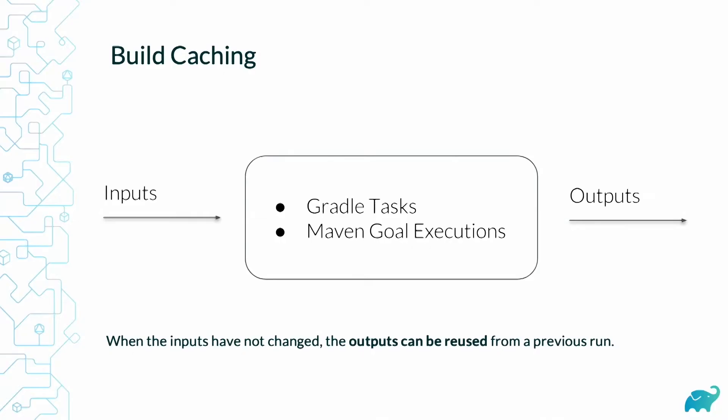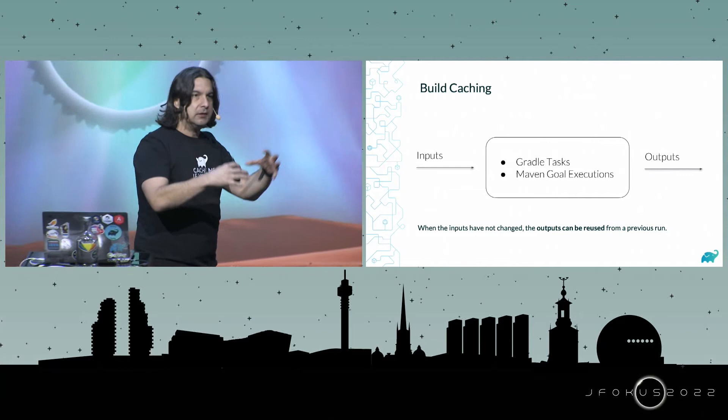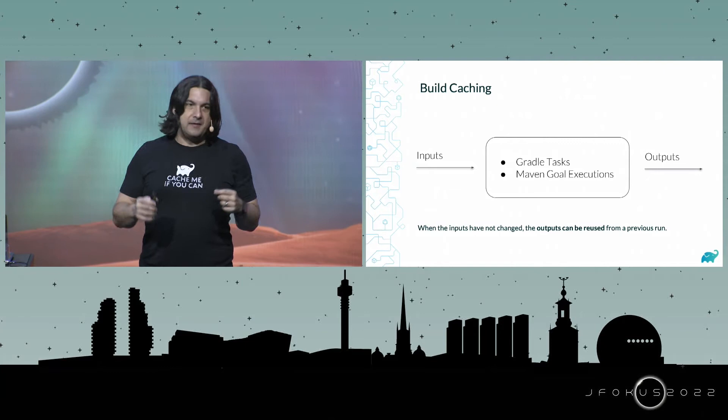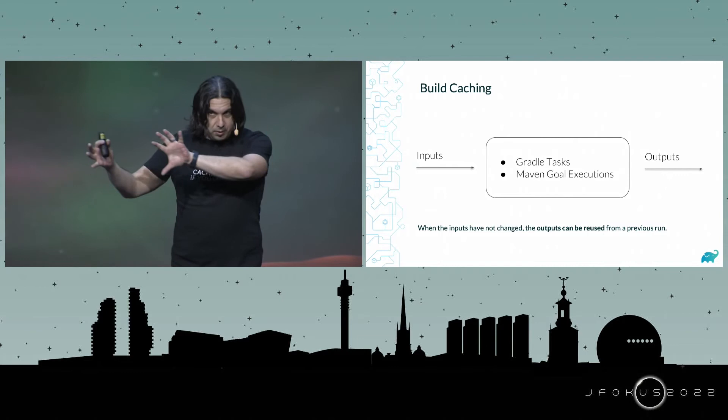The process looks like this: most Gradle tasks, Maven goal executions, or Bazel targets have a specific set of inputs — source code files, environment details, JVM major version, properties — all put together into a cryptographic key. The outputs are stored in the cache against that key. Later, when the inputs are ever the same and capable of generating that same key, we just pull that part of the build from the cache instead of rerunning it. It can be reused by that developer or stored in a remote cache so that CI or other developers can contribute to and benefit from a shared cache.